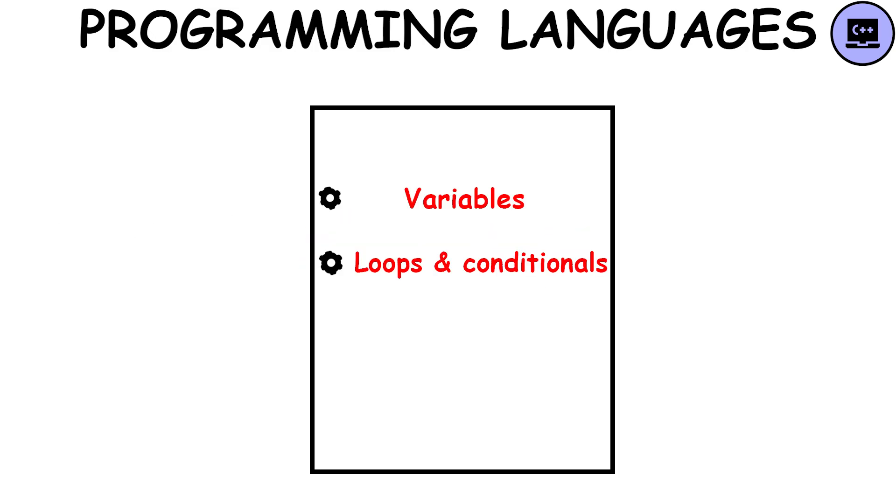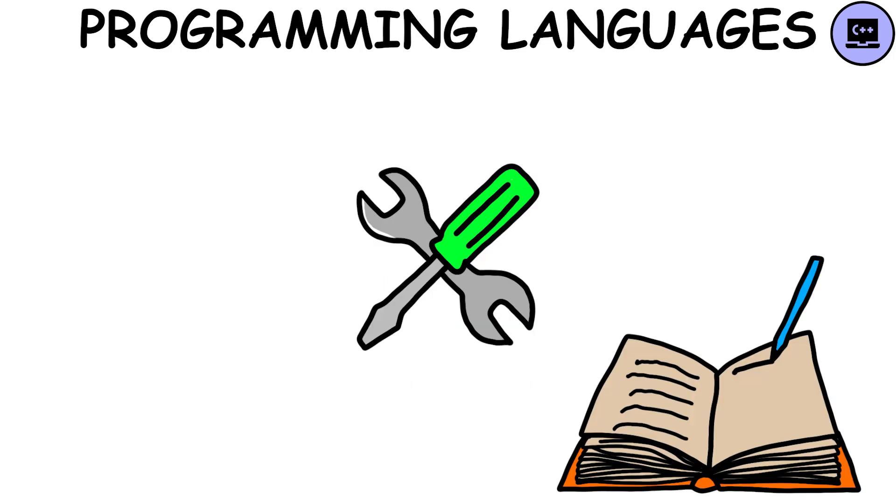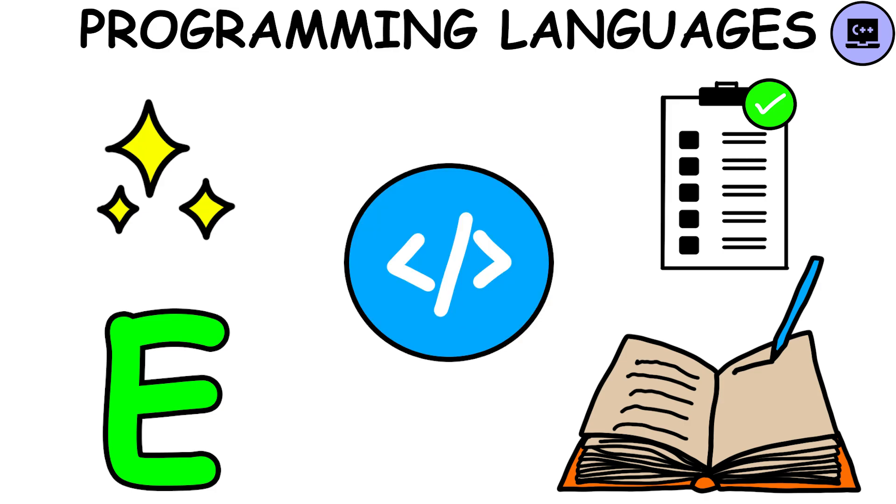These concepts include variables, control structures like loops and conditionals, functions, and data structures. These tools help in writing clear, efficient, and organized code.